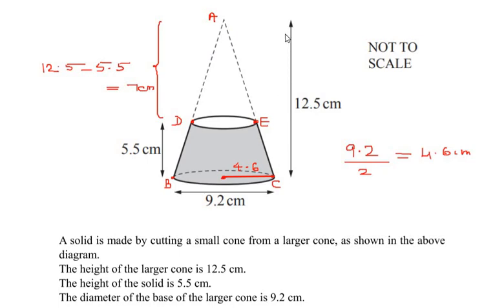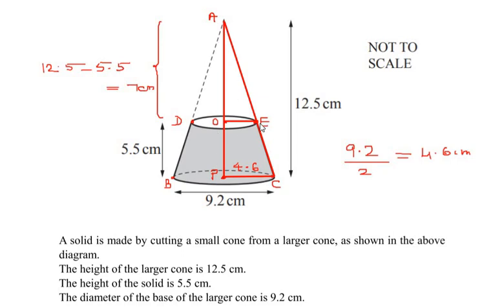We have the height of the smaller cone, the height of the bigger cone, and the radius of the bigger cone, but we do not know the radius of the smaller cone. To find it, we create a similarity relationship between the two cones by drawing a triangle. Let OE be the radius of the smaller cone and PC be the radius of the bigger cone. Triangles APC and AOE are similar triangles since AOP is a straight line.